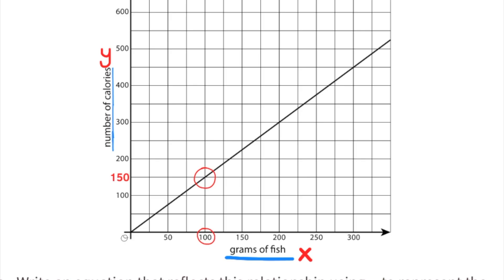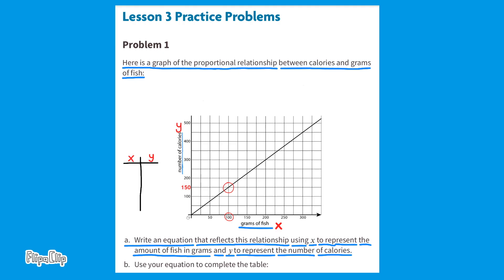I'll use these coordinates to get started. When x is 100, y is 150. If I make the value for x 10 times smaller, that would be 10. To keep it proportional, I make y 10 times smaller too — that's 15. So when x is 10, y is 15. Making x 10 times smaller again gives 1, and y becomes 1.5. These x and y values are coordinates for points on this line.